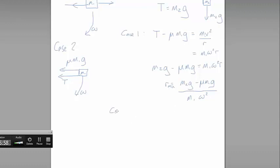And if we take a look at case two, the only difference is that the tension and the friction force are acting in the same direction. So we now have an equation T plus mu m1 g equals m1 v squared over r. And we could follow all this through, but the end result is going to be that r max is equal to m2 g plus mu m1 g over m1 omega squared. Again, if we want, we can factorize out those g's.